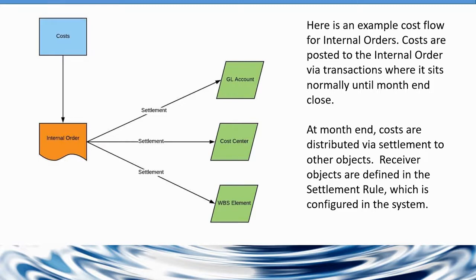This internal order can then move those costs to any other objects based on the settlement rule. Its actual processing is done in terms of allocating these costs from this type of order, which is a real internal order versus a statistical internal order.